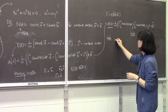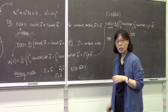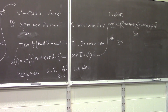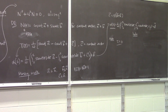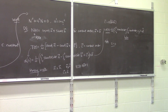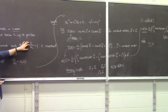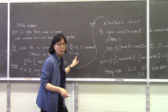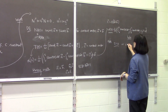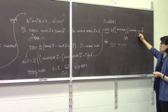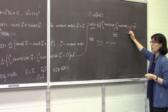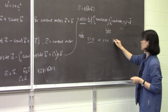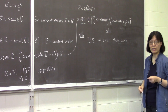What happens when the torsion is zero? We know that torsion is zero means c equals zero. So the constant c we used is zero. If we set c equal to zero in the formula, we only have x and y components. That shows this is a plane curve.